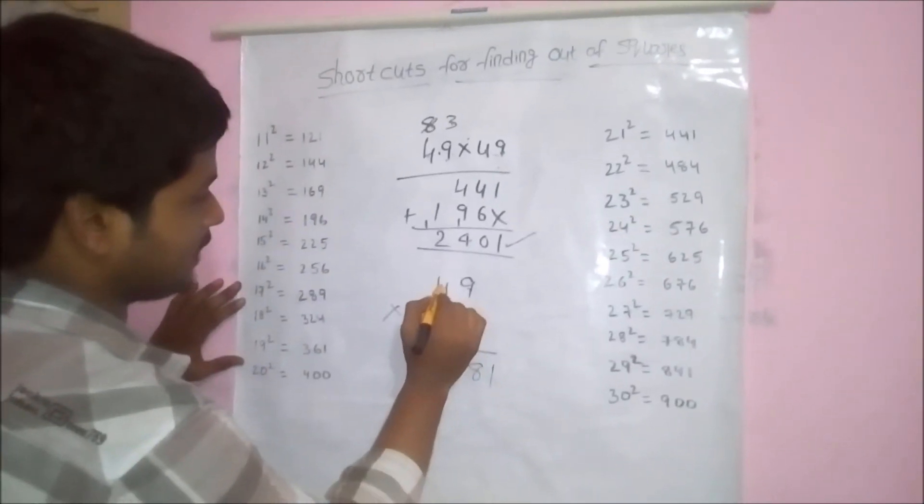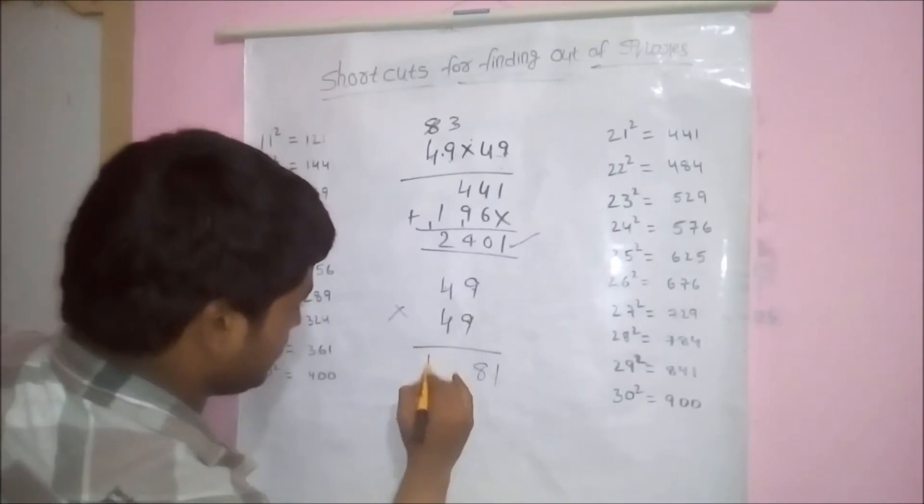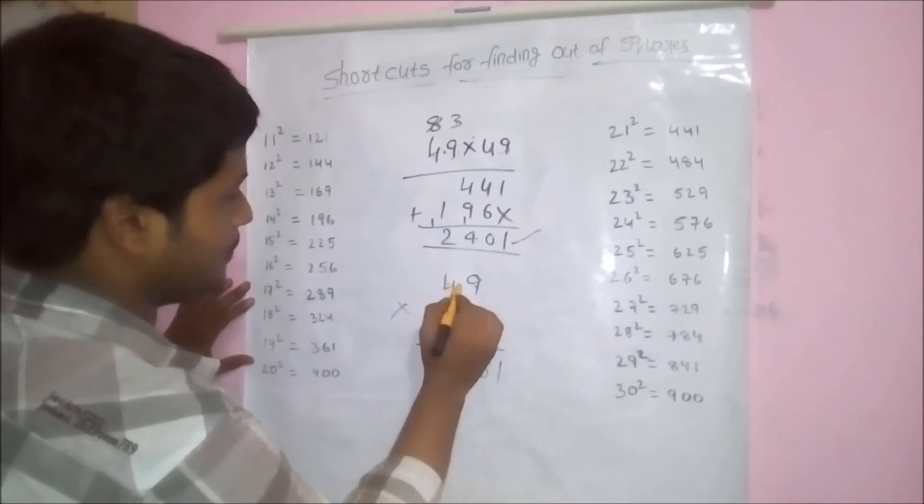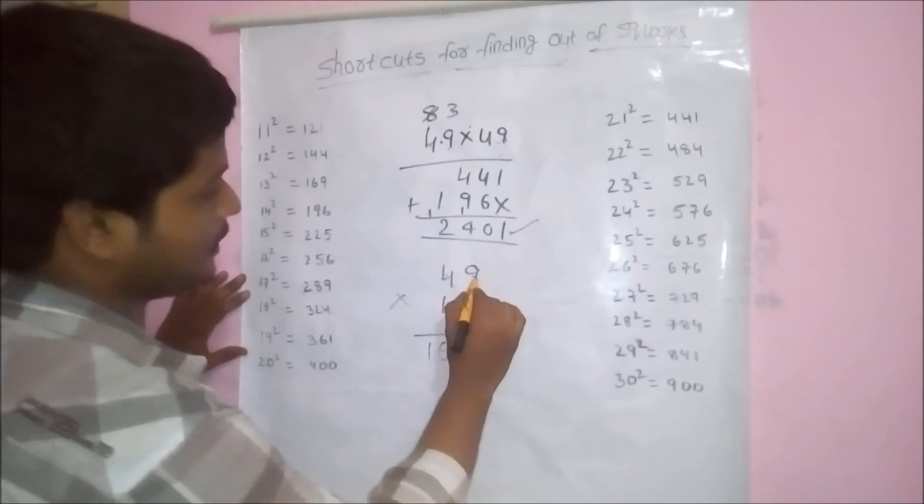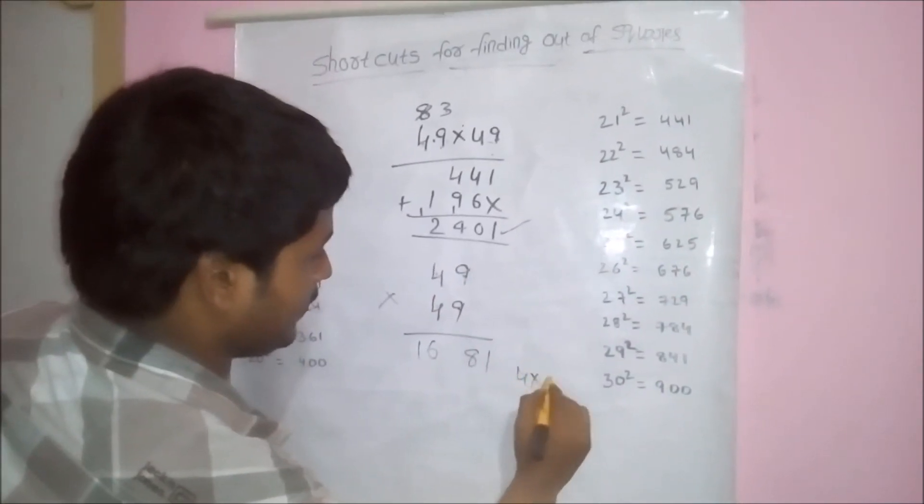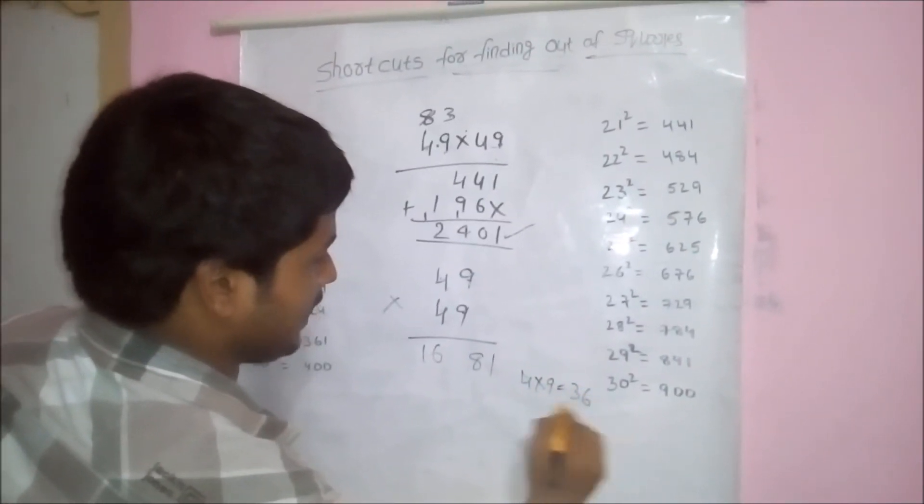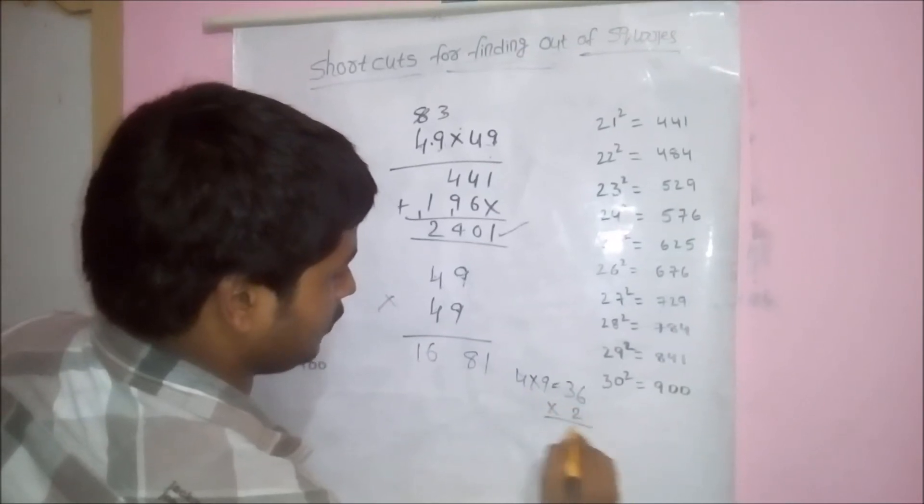And tens place, square them. 4 fours are 16. And multiply unit digit and tens digit. 4 nines are 36. And double them, like 4 into 9, 36. And double the value: 36 into 2, 72.